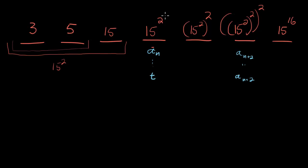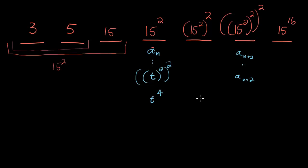So we're looking for a relationship between t and a sub n plus 2. How do I get from here to here? Well, we're just squaring this twice — we square it once, and then we square it again. Squaring twice is the same as raising to the fourth power — that's the same as saying t to the fourth. So t to the fourth equals a sub n plus 2, and that is our answer — answer choice D.